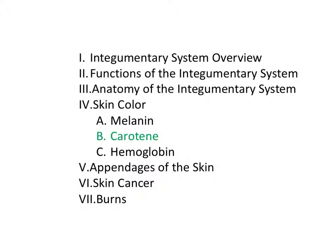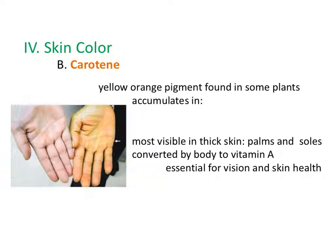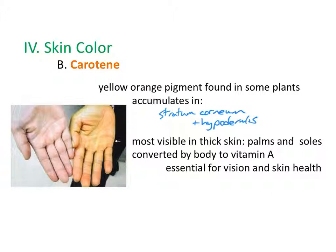Carotene is not created in the skin. It is a yellow-orange pigment found in some plants, primarily carrots and squashes. It accumulates in the stratum corneum and hypodermis and is most visible in areas of thick skin, like the palms and soles. Carotene is not harmful — the body converts it into vitamin A, which is needed for vision and skin health.